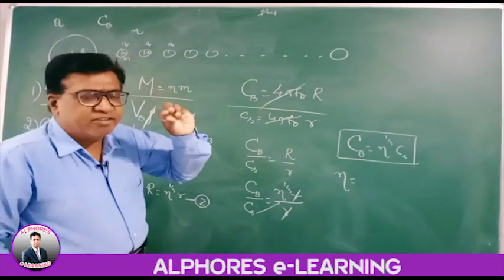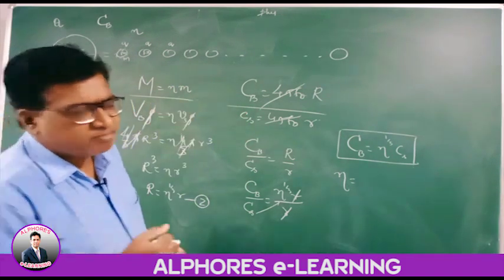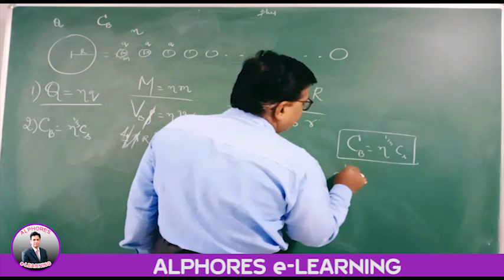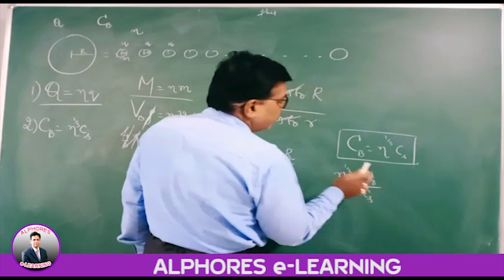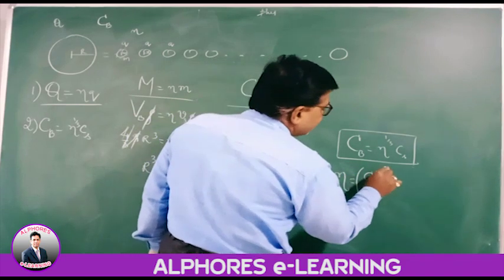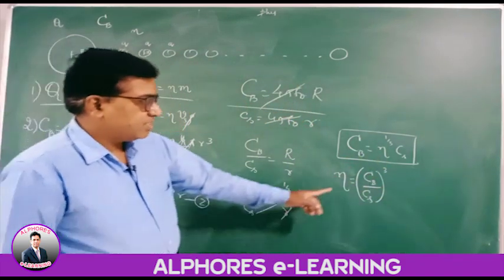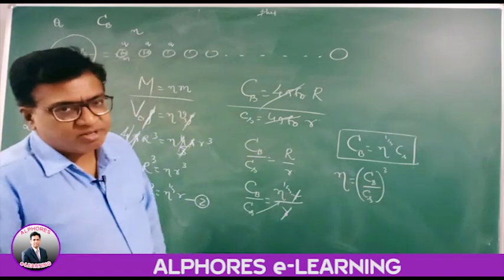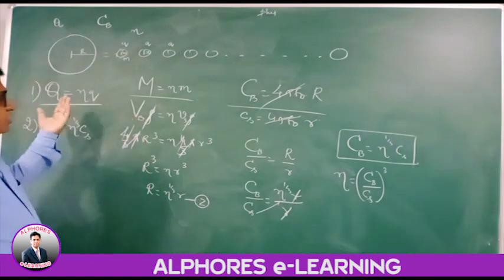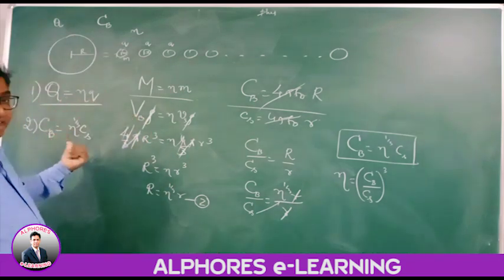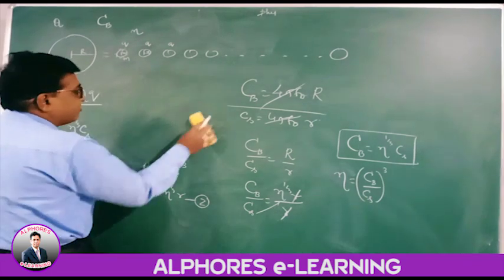N tiny liquid drops of capacity small c each combine together to form a big drop of capacity capital C. To find the number of drops N: N^(1/3) = C_big/C_small, so cubing both sides gives N = (C_big/C_small)³. He can also ask you to find the surface charge density.